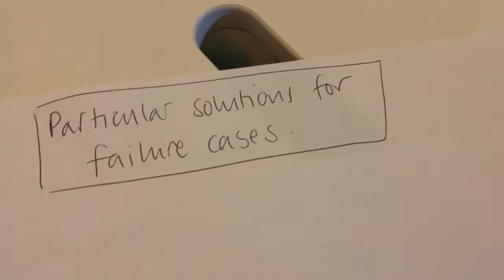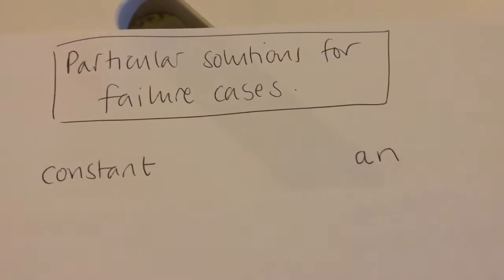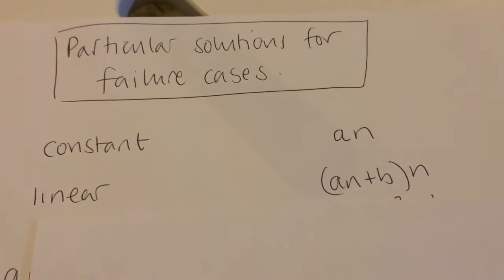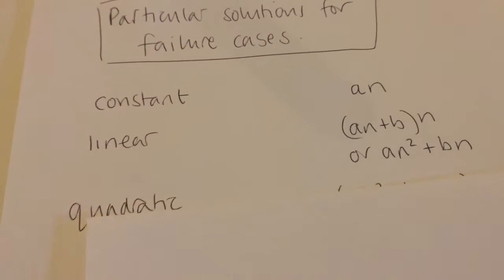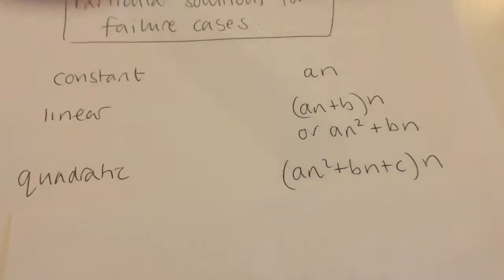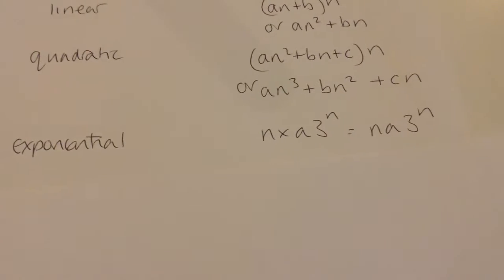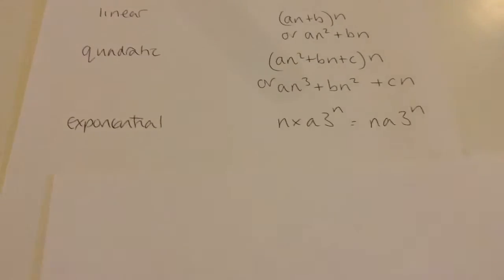So we need a system. If we've got a failure case, all we do is multiply our particular solution by n. For a constant particular solution, instead of a, it becomes an. For a linear particular solution, instead of an plus b, it becomes (an plus b) times n, which expands to an² plus bn. For a quadratic, instead of an² plus bn plus c, it becomes (an² plus bn plus c) times n. And for an exponential, instead of a times your number to the power n, it becomes n times a times your number to the power n.